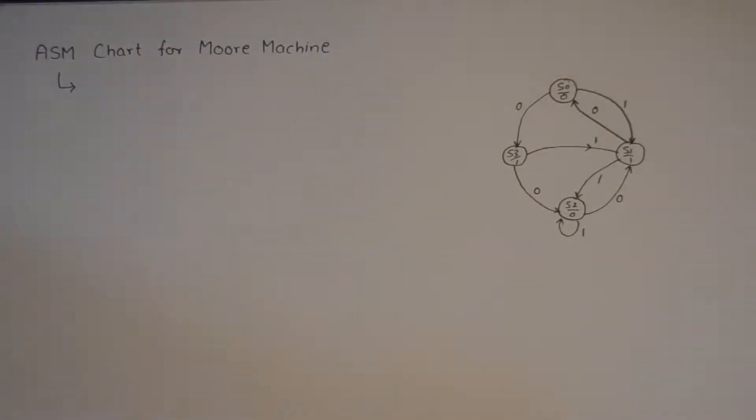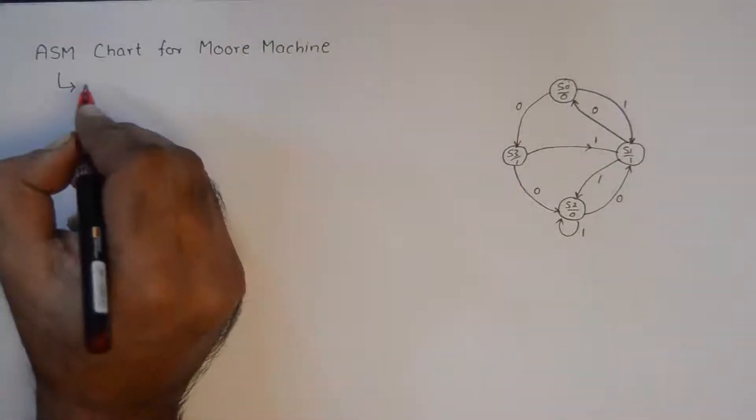Hello internet, welcome to another tutorial in digital system design. In this tutorial we'll talk about ASM chart for Moore machine. In the previous tutorial we designed the ASM chart for Mealy machine, we discussed the components required to draw the ASM chart, which is by the way the algorithm state or system machine.